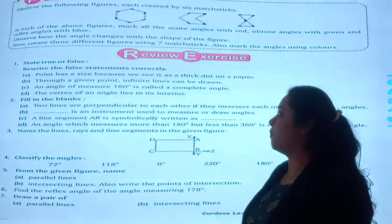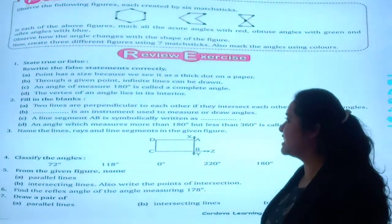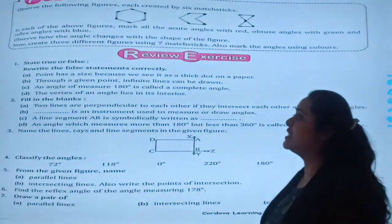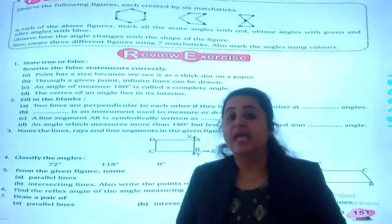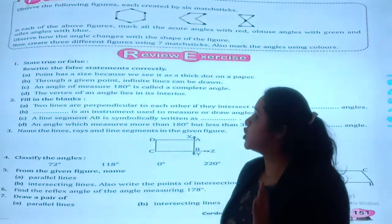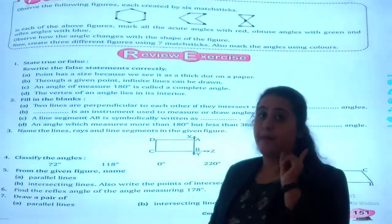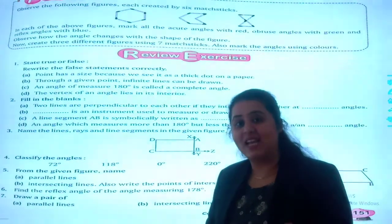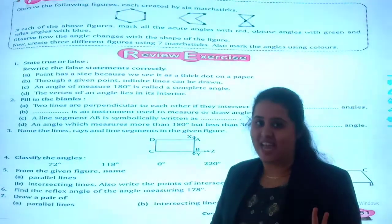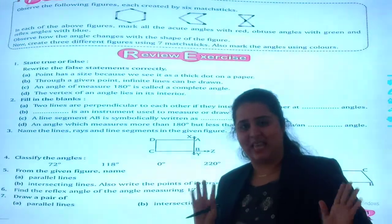The third is, an angle of measure 180 degrees is called complete angle. An angle measure of 360 degrees, it is a complete angle. But the measure of 180 degrees is the straight angle.